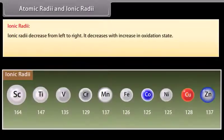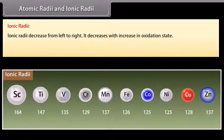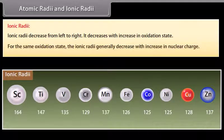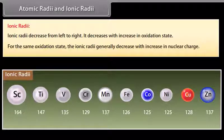Ionic radii decrease from left to right. They decrease with increase in oxidation state. For the same oxidation state, ionic radii generally decrease with increase in nuclear charge.